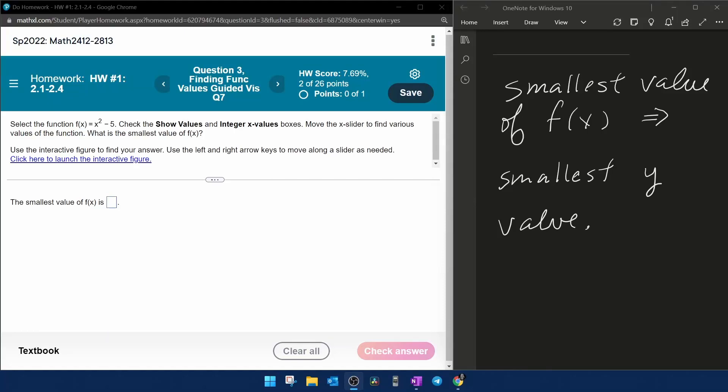All right, here we go. Question number three from our pre-cal homework number one in MyLabMath. They want us to select the function f(x) equals x squared minus five from the interactive figure.